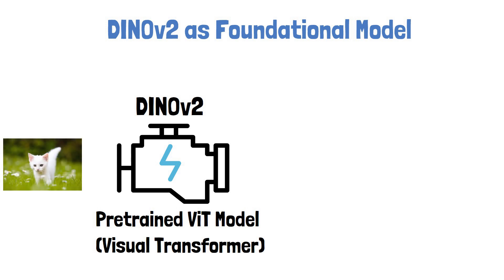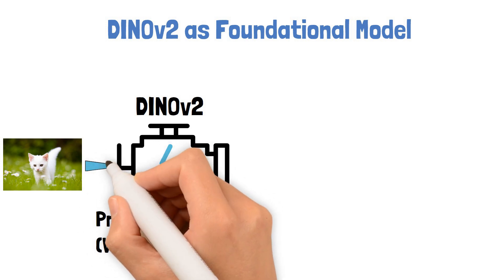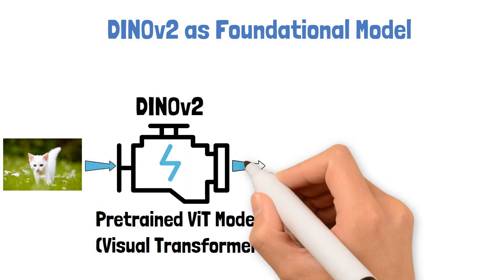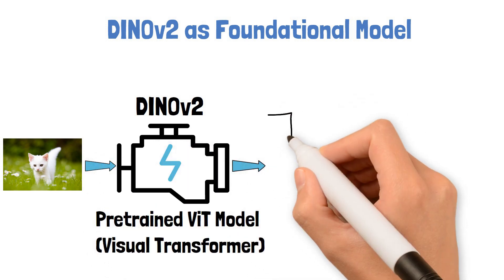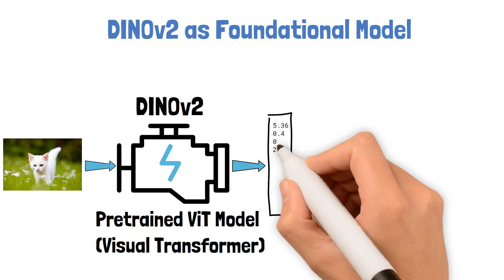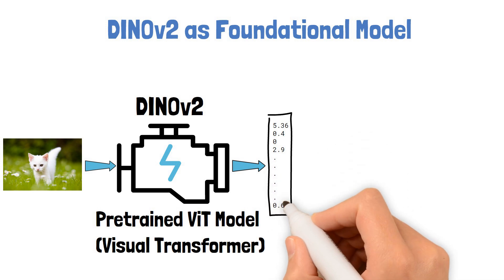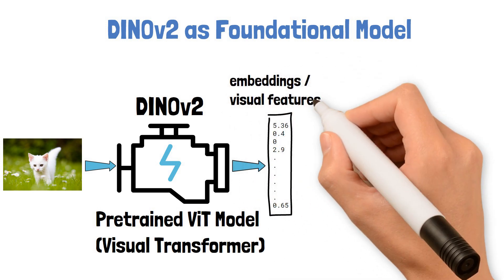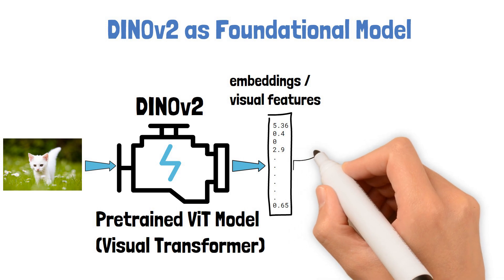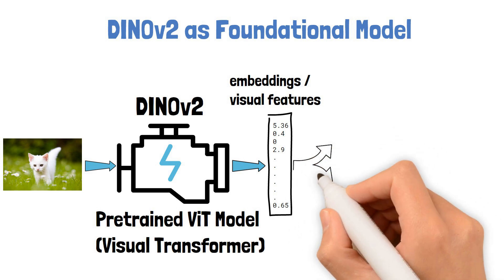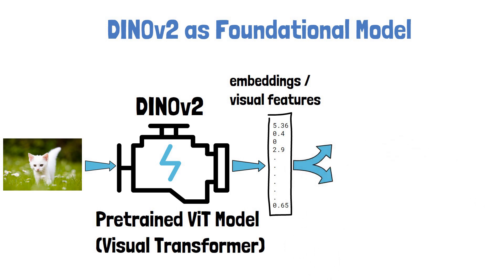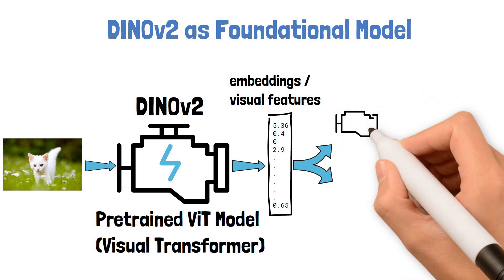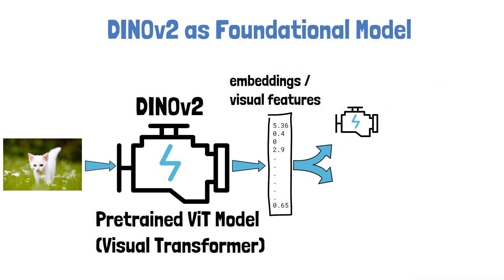Say, for example, that we have a cat image. We can provide this image as an input to DynoV2. DynoV2 will yield a vector of numbers, often called embeddings or visual features. These embeddings contain a deep understanding of the input cat image, and once we have them, we can use them in smaller, simpler models that handle specific tasks.